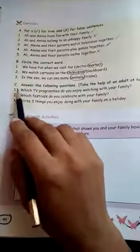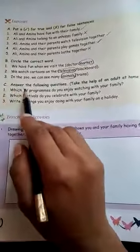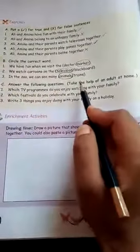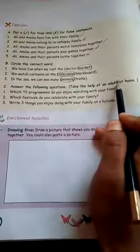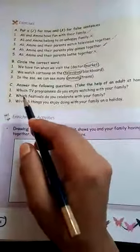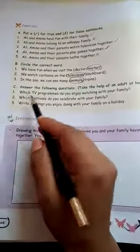So now let us complete the third exercise, that is answer the following questions. Take the help of an adult at home. So let us see, I will tell you how to write this.